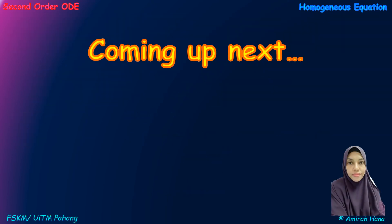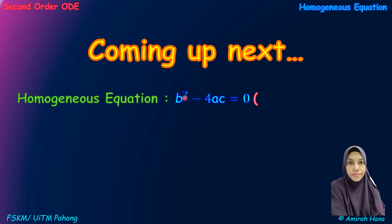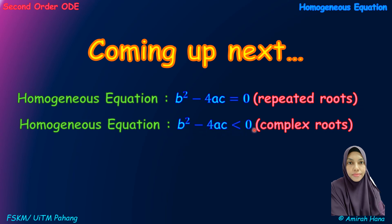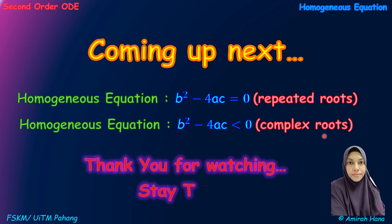Coming up next: homogeneous equation with B squared minus 4AC equals 0 (repeated roots), and homogeneous equation with B squared minus 4AC less than 0 (complex roots). If you like this video, please subscribe. Thank you for watching.